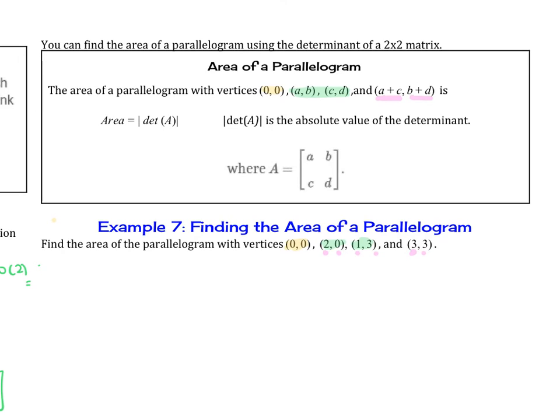So we're going to find the area. Area equals, so this is a and b, and this is c and d: [2, 0; 1, 3]. And then we find the determinant of this. So that is going to be 6 minus 0, or 6 square units.